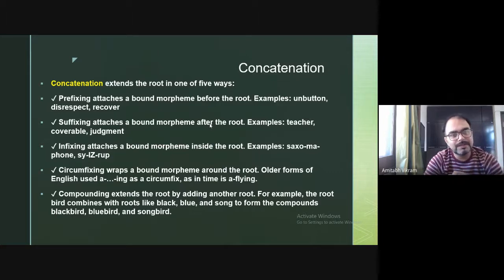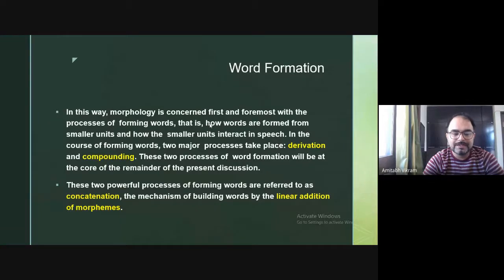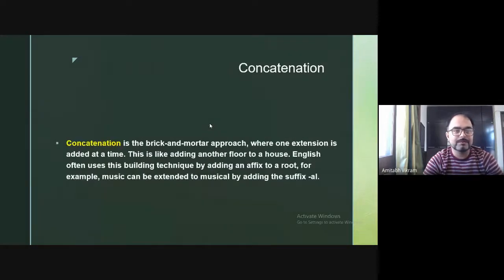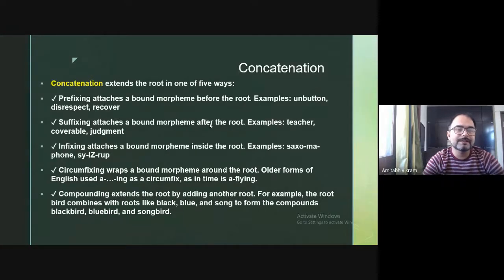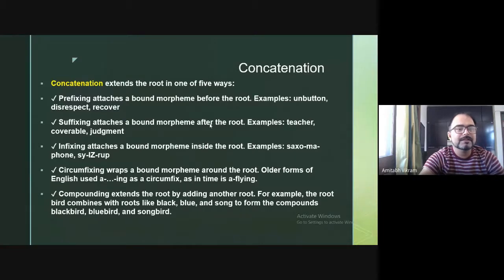To summarize, concatenation is simply the mechanism of building words by the linear addition of morphemes. You have five ways to do this: prefixing, suffixing, infixing, circumfixing, and compounding. Prefixing and suffixing are the most common and familiar, while infixing, circumfixing, and compounding round out the five concatenation processes.